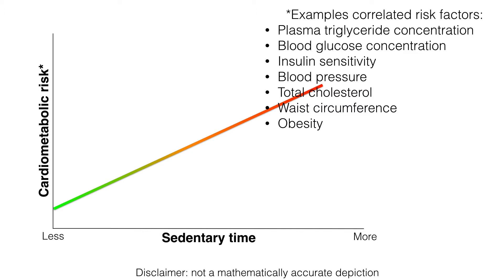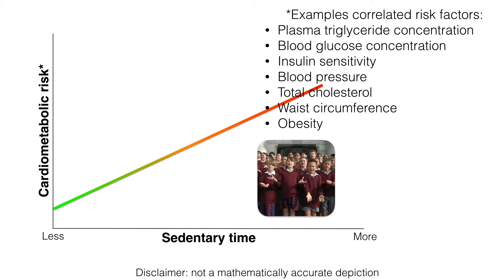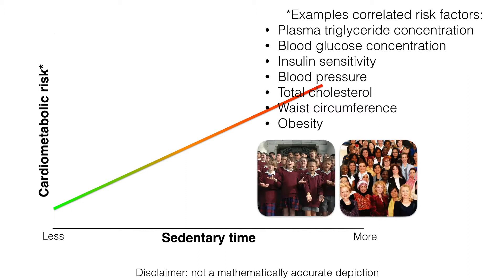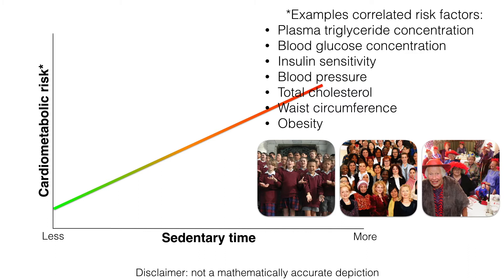Some research even suggests that sedentary time may have a stronger influence on waist circumference than the amount of moderate to vigorous activity. In children and adolescents, there's also an apparent relationship with academic achievement and behaviour, improving with less sedentary time. That said, the association between sedentary time and body fat in children has been questioned due to inconsistent results and limited quality in assessment of sedentary behaviour. So we don't have all the answers yet, but we're getting a pretty clear picture.